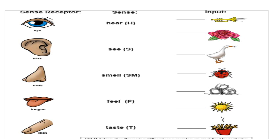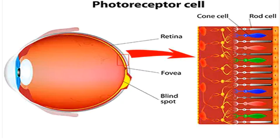Hello, welcome to the 11th episode of Neuroanatomy. Today we are going to talk about receptors. You can say that receptors are the connection of your body with the outer world. As the eye has photoreceptors, they receive light and send it to the brain, and with photoreceptors you are able to see the world.